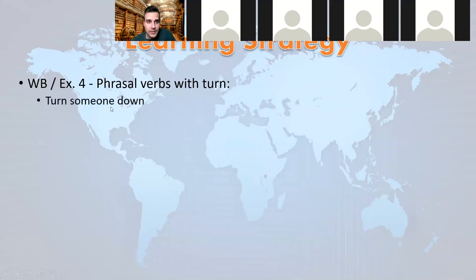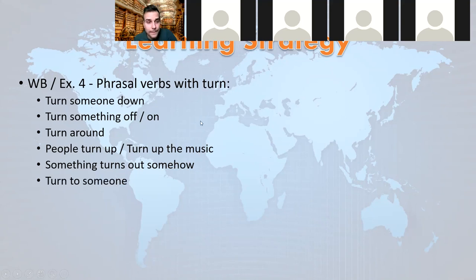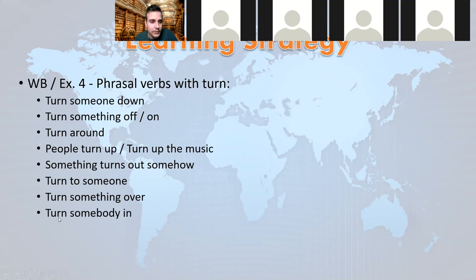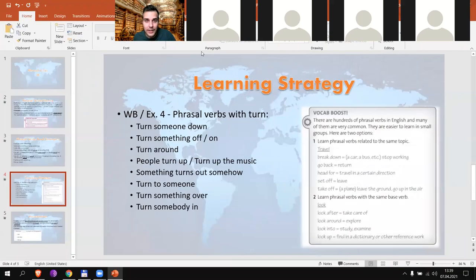Here are some examples: turn somebody down, turn something off and on, turn around, people can turn up at a party, turn up the music, something turns out a certain way — for example, 'I didn't think I'd pass the test but it turned out very well.' Turn to someone when you have a problem. Turn something over — like 'turn the money over.' Turn somebody in — you commit a crime and I go to the police to turn you in. This learning of phrasal verbs will never end — even after years of speaking and studying English there are always more to learn. That's it for today!